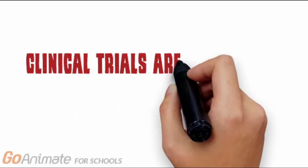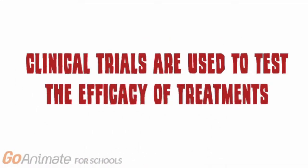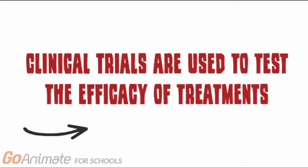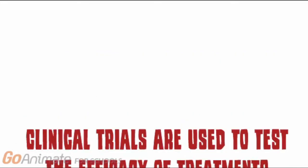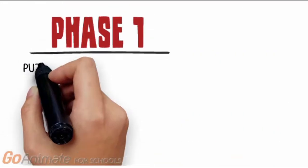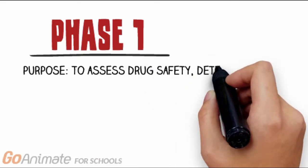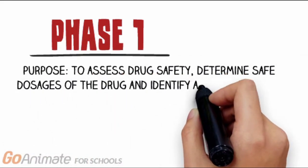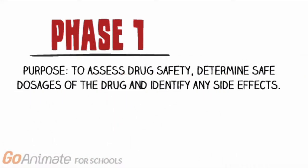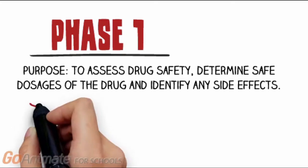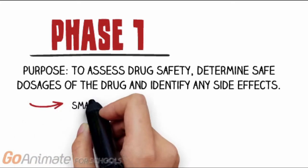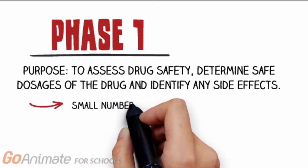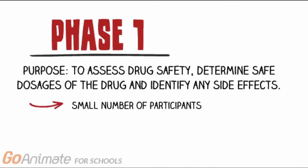Clinical trials are used to test the efficacy of treatments, and these trials are usually split into four phases. The purpose of Phase 1 is to assess drug safety, determine safe dosages of the drug, and identify any side effects. Since this is often the first time a drug is tested in humans, a small number of participants are recruited, usually those who are not getting better with standard treatments.